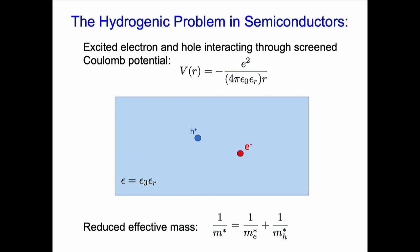We can go to a similar problem in solid state physics: the hydrogenic problem in semiconductors. Assume we have an excited electron in the conduction band and a hole remaining in the valence band. These charged particles interact through a screened Coulomb potential. The electron orbits around the hole, but now the screening is no longer vacuum ε₀ but ε₀ × εᵣ, the relative dielectric constant. At the end, it's the same problem as the hydrogen atom.